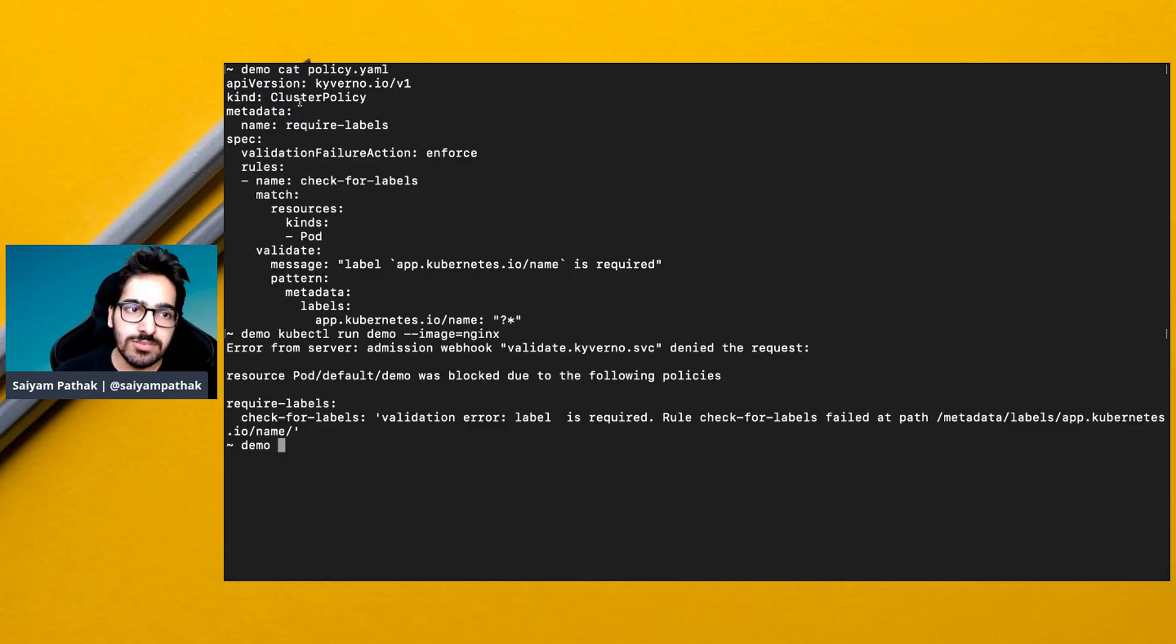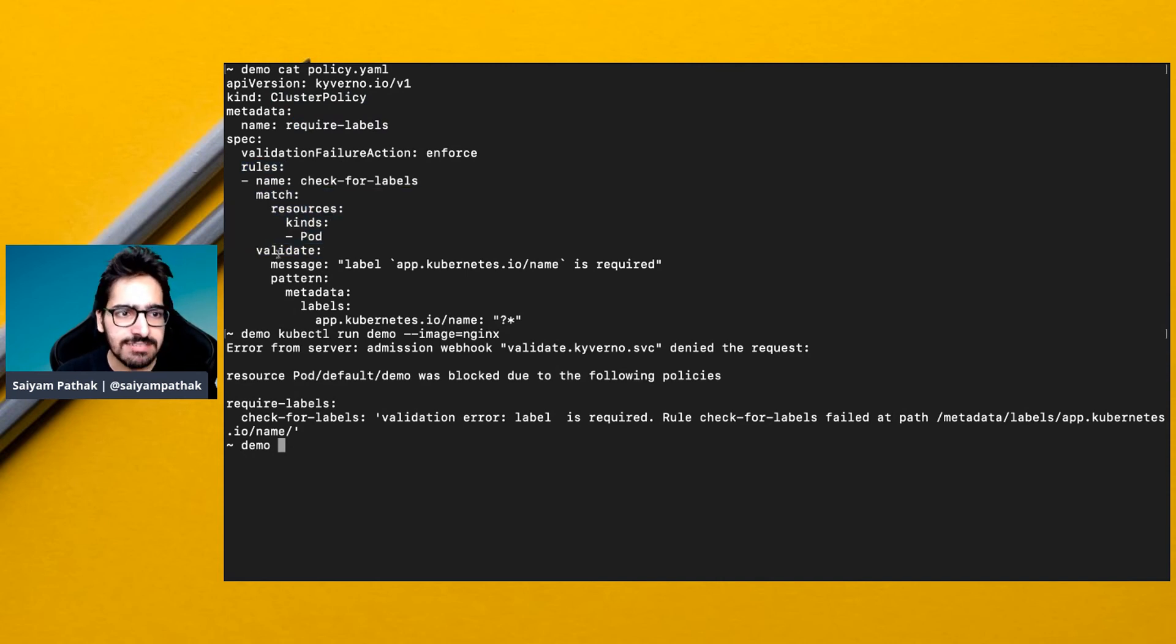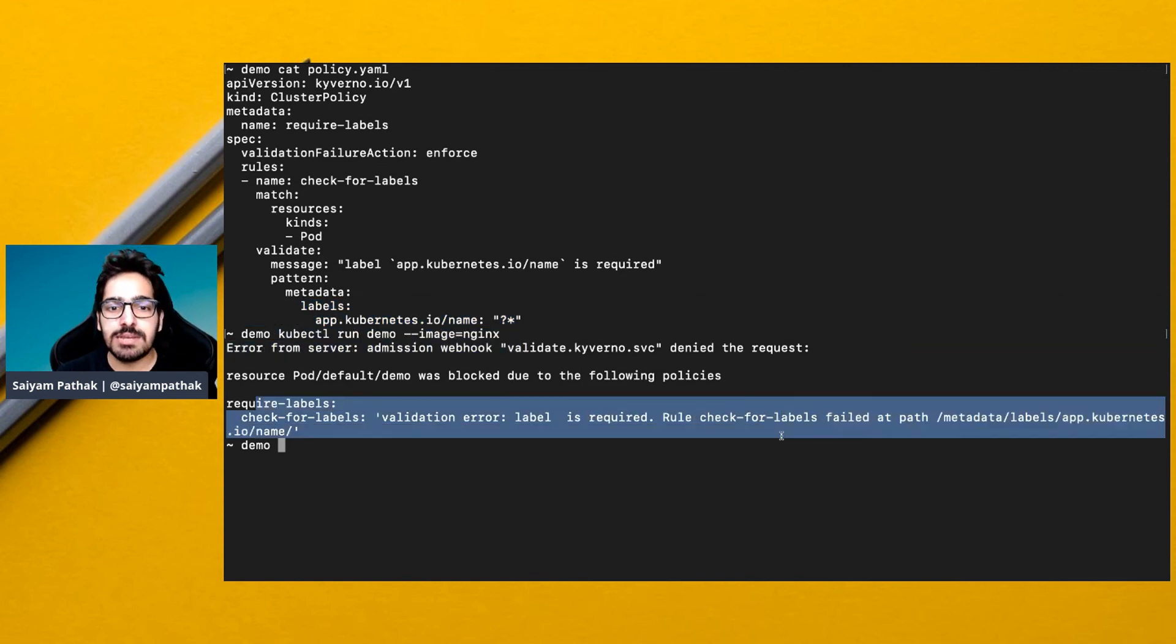Now let's see a demo policy. So this is a cluster policy of required labels. And this is a rule. In the rule, we first match the resources, which is pods in this case, and then the validate. So validate pattern, there is a particular label should be there on the pod. And when I try to create a pod, it just simply says that required label is missing. So that's how simple it is to create the policy and apply it to Kubernetes.